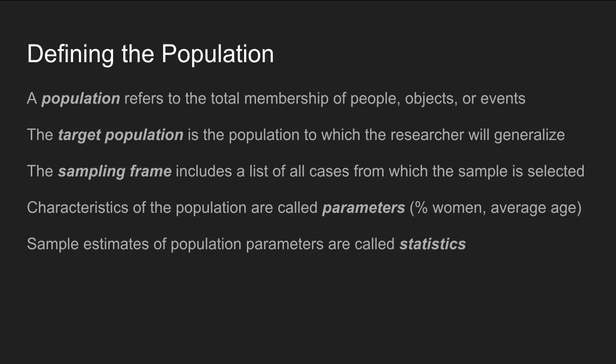One of the first steps in sampling is defining who your population is — the group of people you're interested in studying. A population refers to the total membership of people, objects, or events that the researcher is interested in. Once you've identified that population, the next step is developing your target population — the group of people to which the researcher will generalize their findings, often specifying a particular age group or time period.